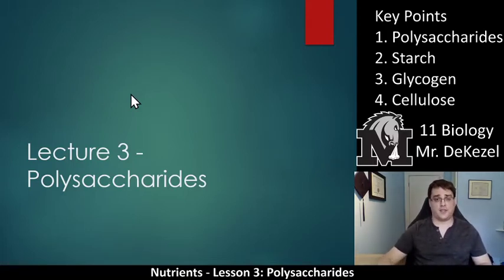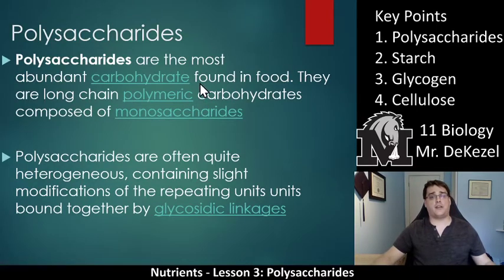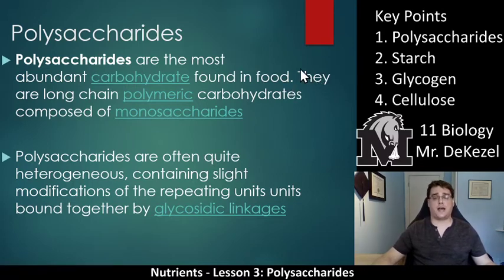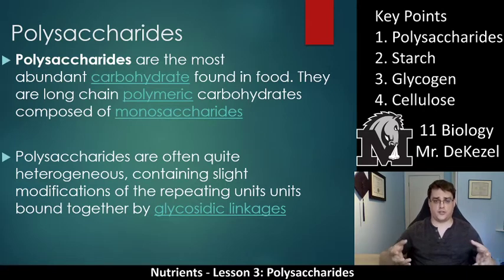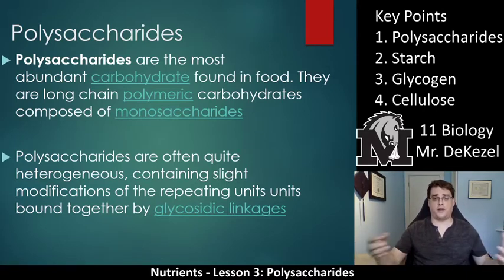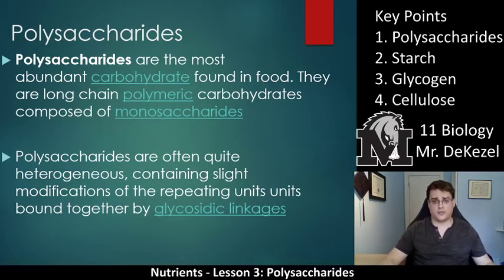It is another type of sugar. Polysaccharides are the most abundant carbohydrate found in food. Polysaccharides means lots of sugars, so they are in long, long chains — we call them polymeric chains. They're composed of a whole bunch of monosaccharides, often a particular monosaccharide: glucose. Glucose is the most common one through all of these polysaccharides.